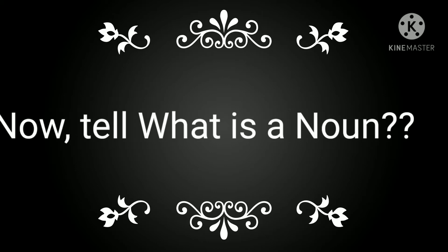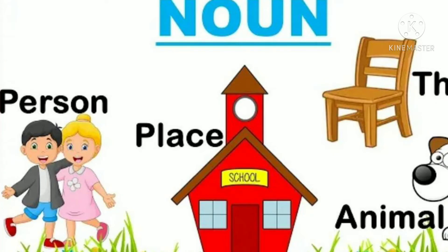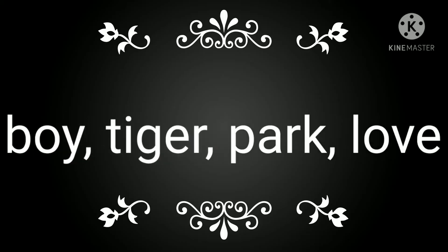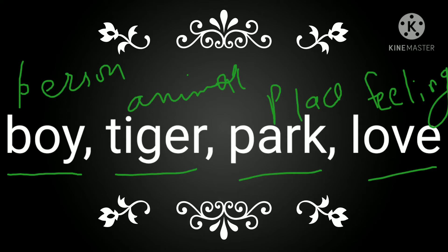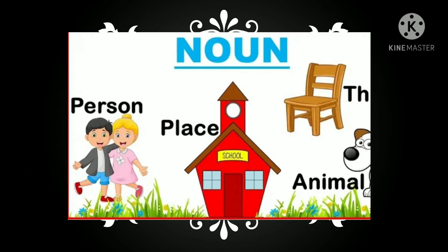So now students, tell me what is a noun? Kisiy bhi person, place, animal or thing ka name — yee kya hottey hai? Noun. To jaysay meinnei aapko example diyei: boy, tiger, park, love — to yee sabhi kisiy na kisiy ka name hai. Boy kisiy bache ka name hai, tiger kisiy animal ka name hai, park kisiy place ka name hai, aur love feeling ko show kar raha hai. To everything has a name in this world and that name is a noun.